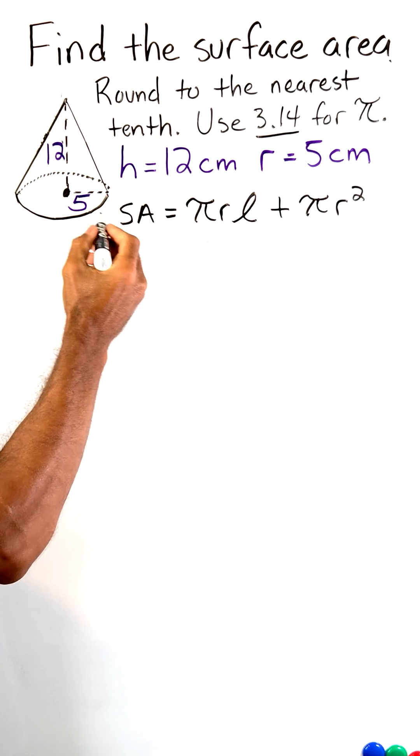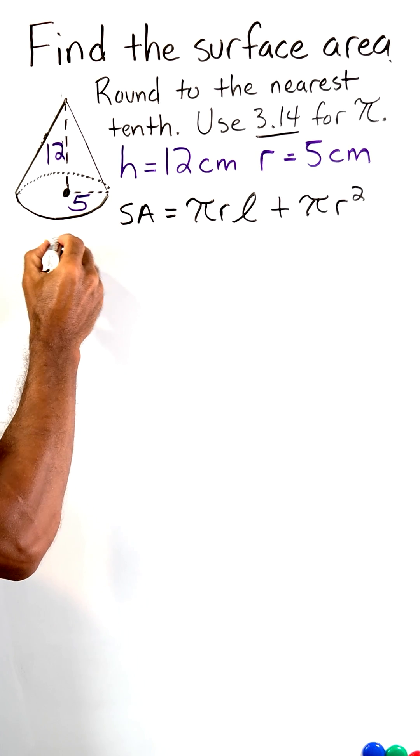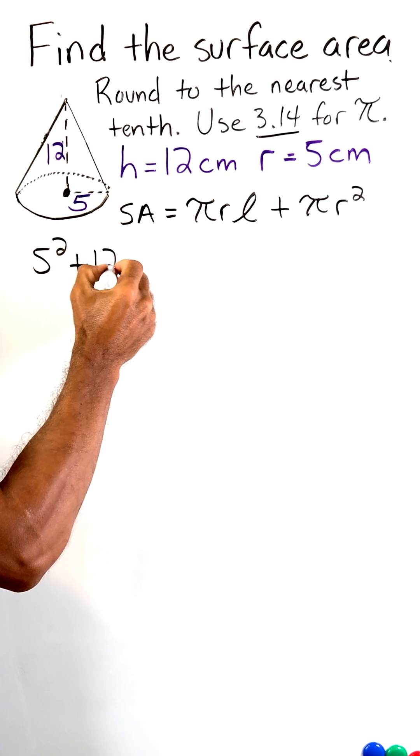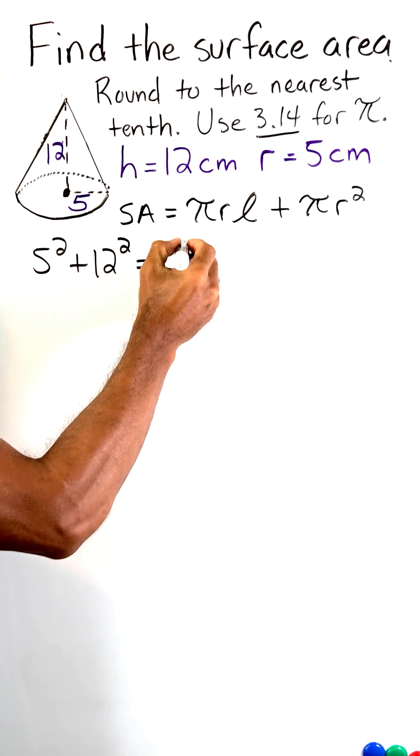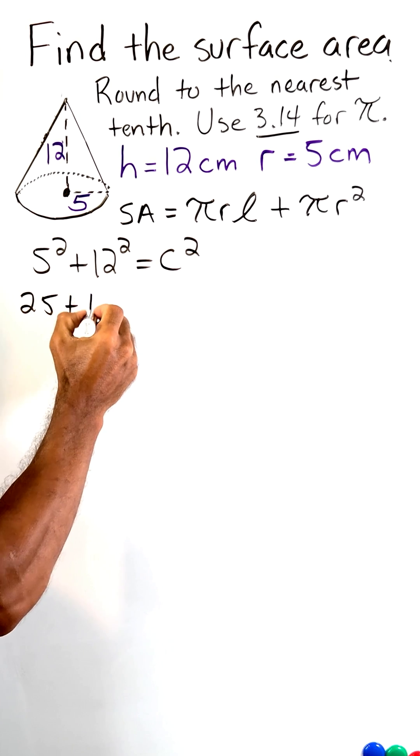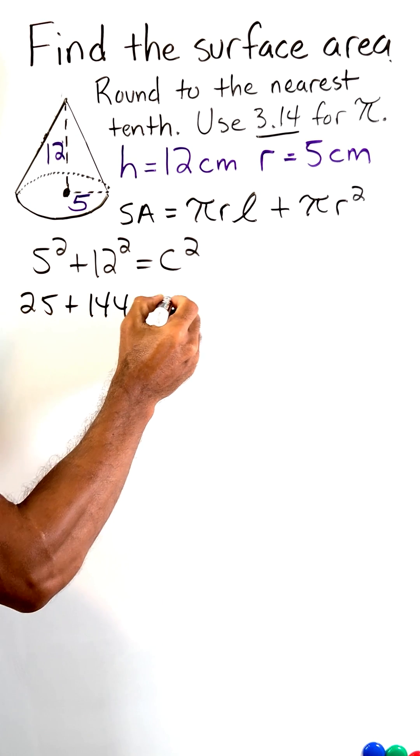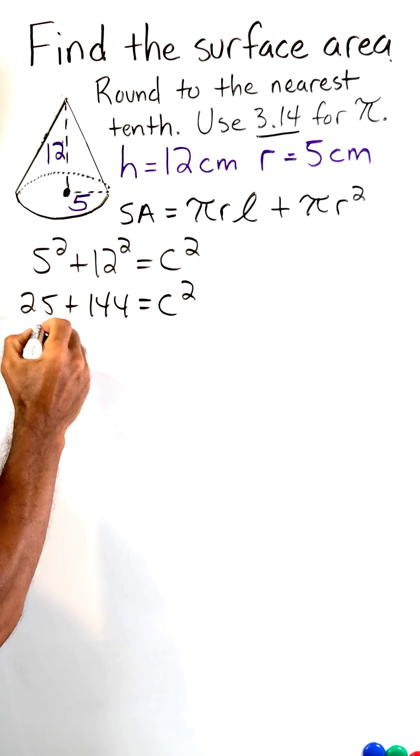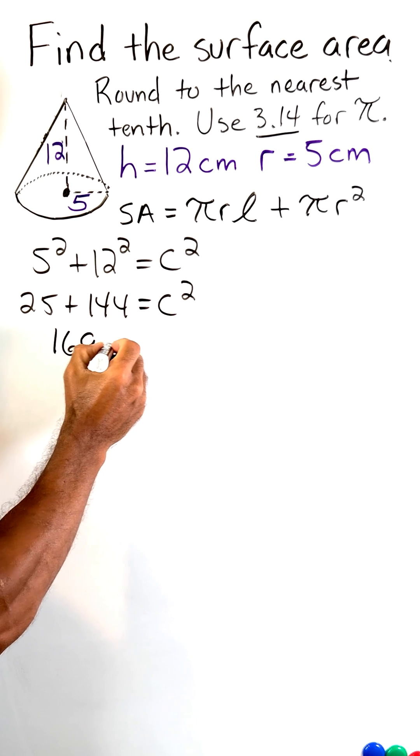So the two legs of our right triangle are given. So we square both of those, five squared and 12 squared, and that's going to be equal to C squared. So we have 25 plus 144, which equals C squared. And when you add these together, we get 169, which is equal to C squared.